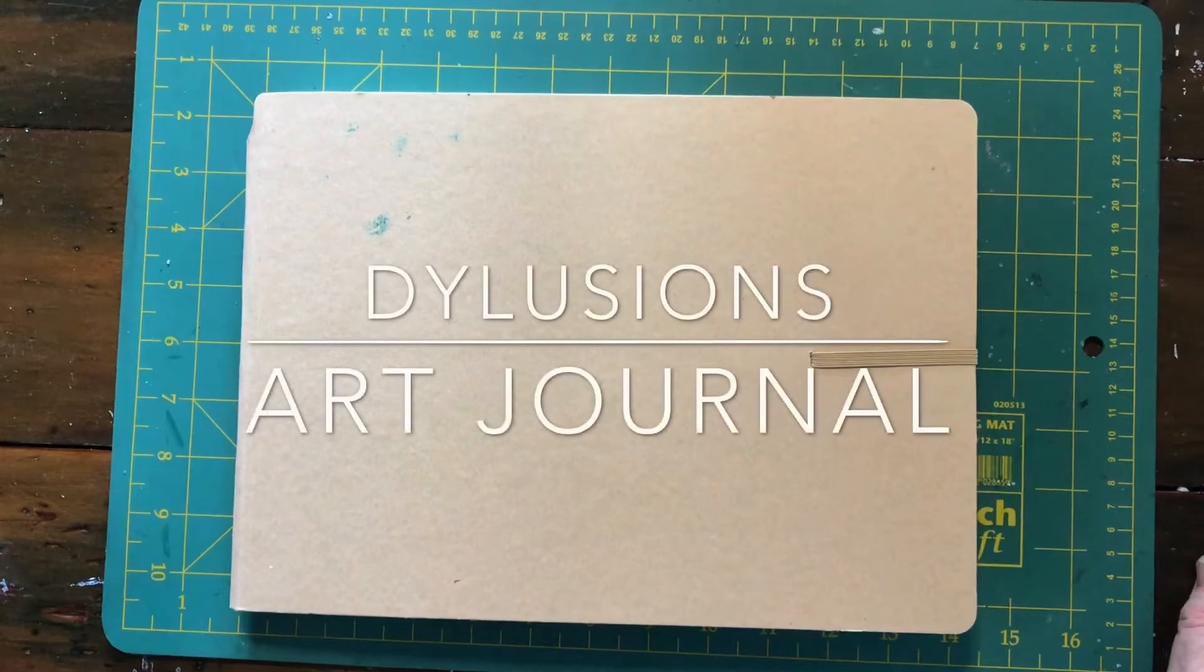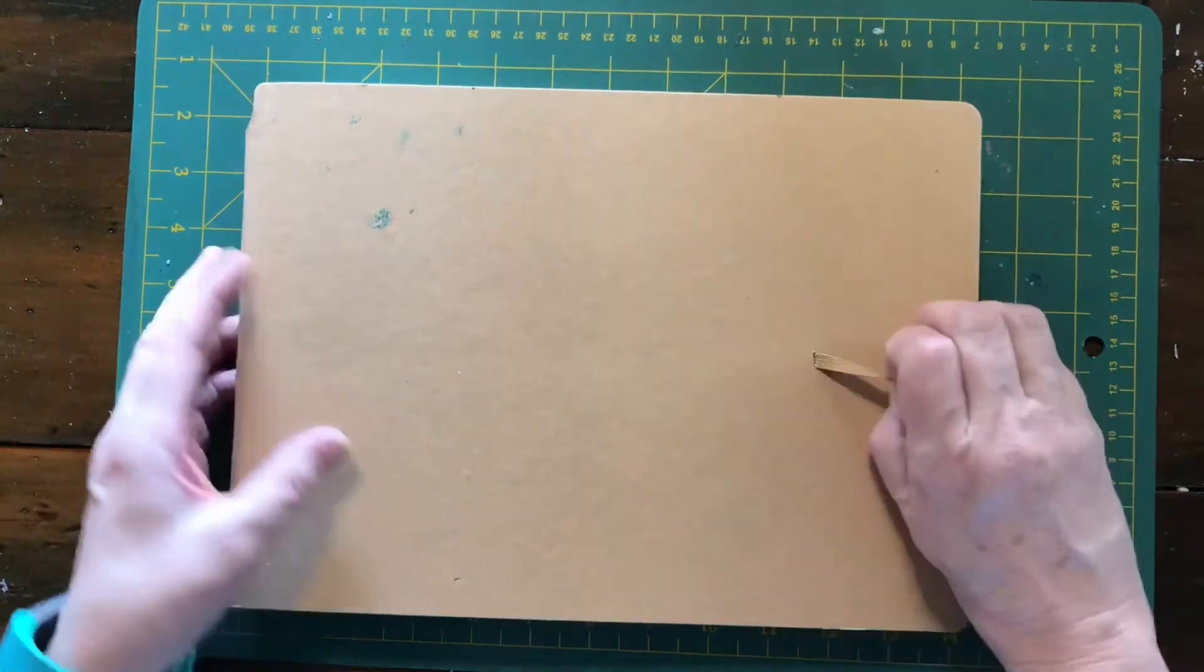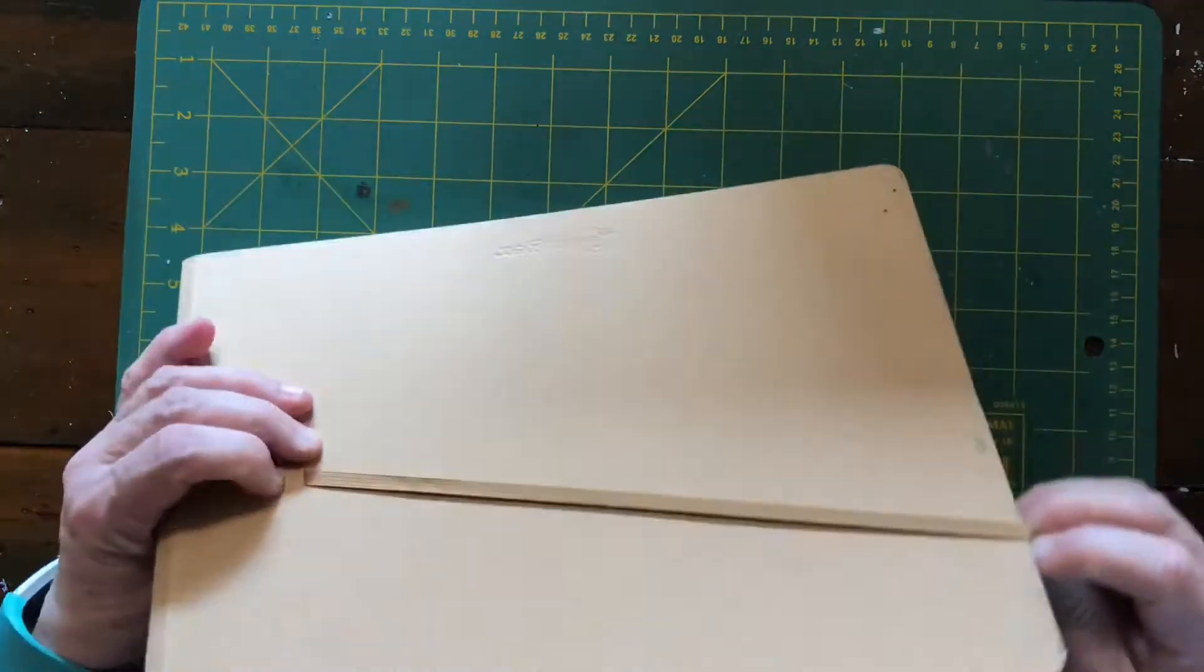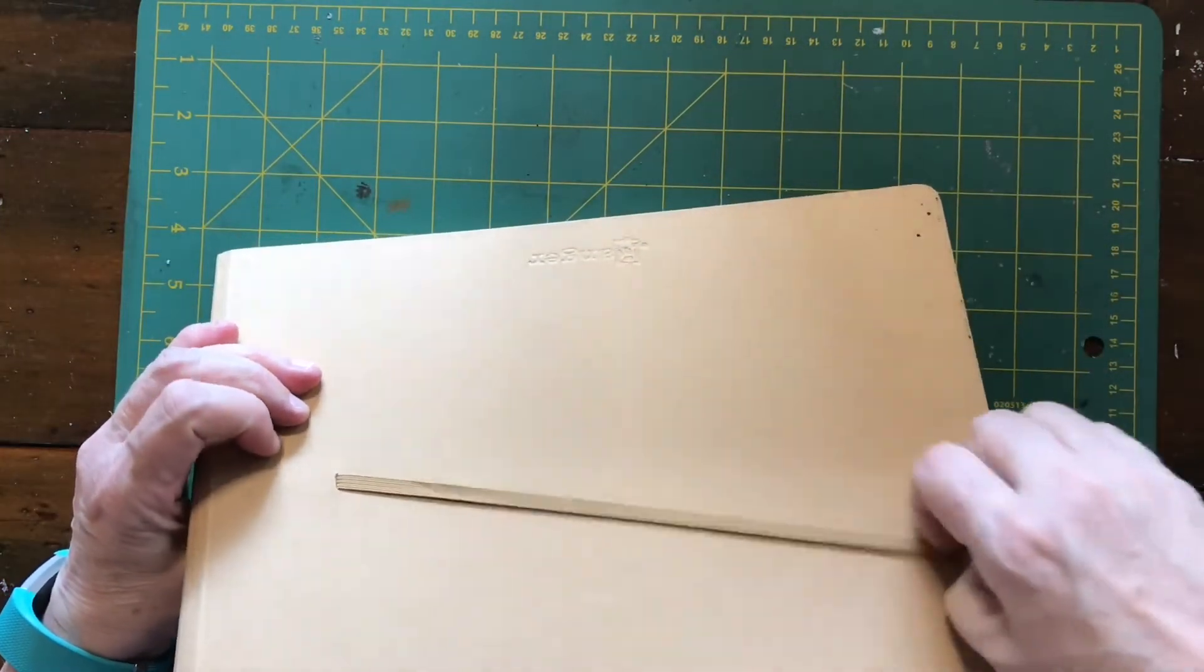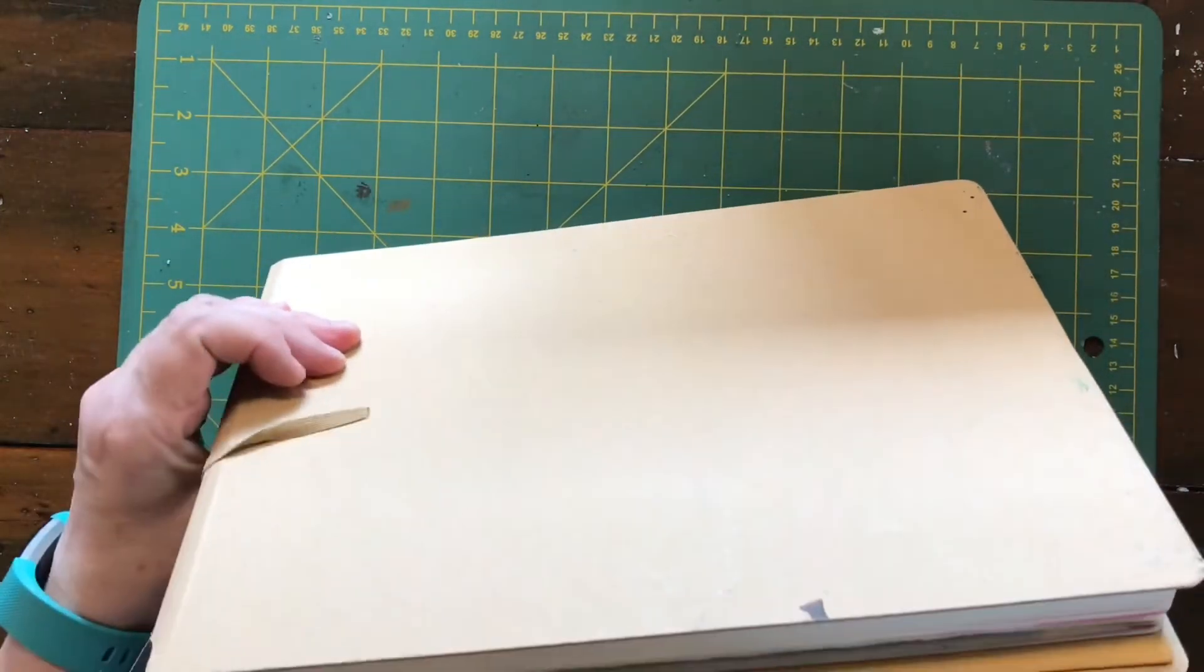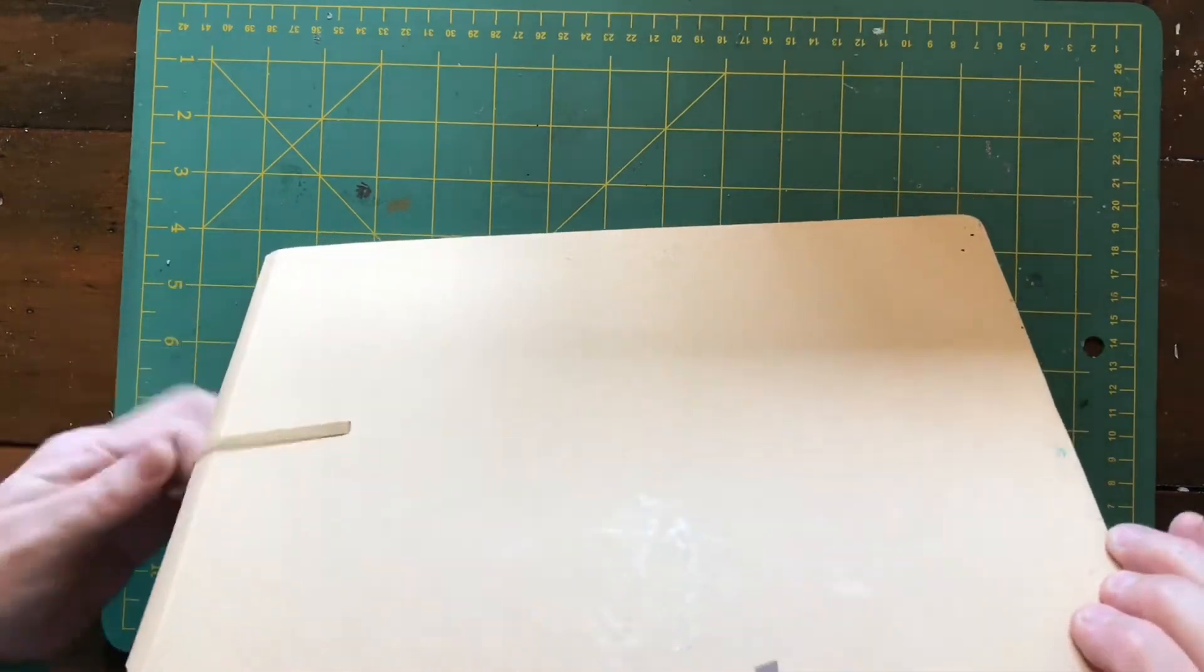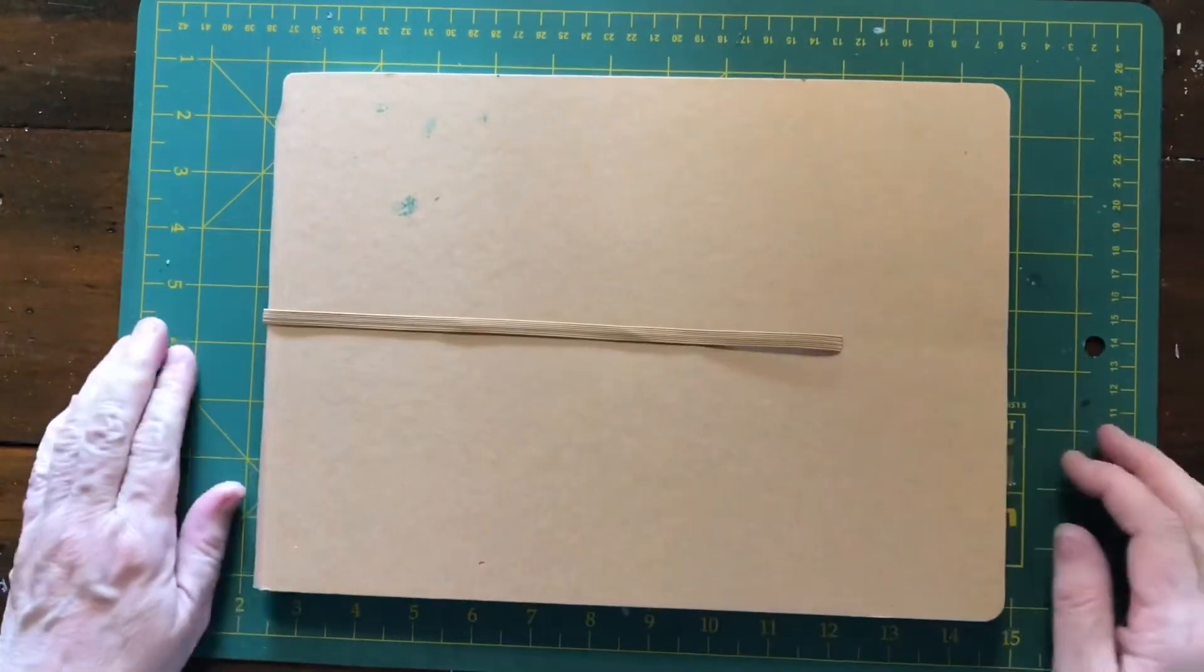Hi everyone, this is my Dellusions art journal. It's got this elastic on it that goes around the back. You just pull that off and put it to the back like that and then it sits along the front.